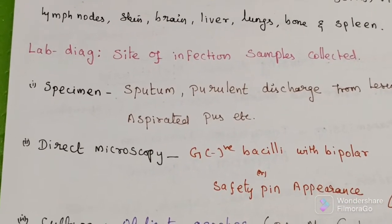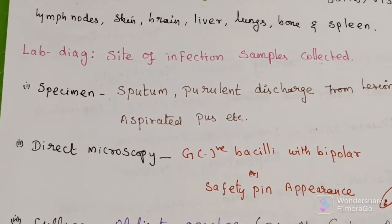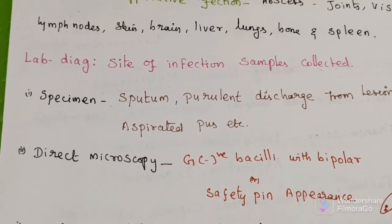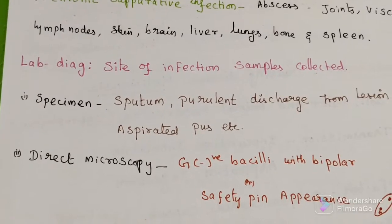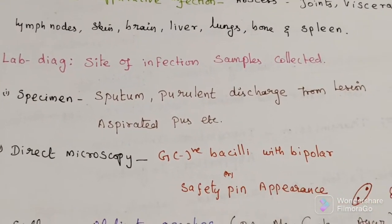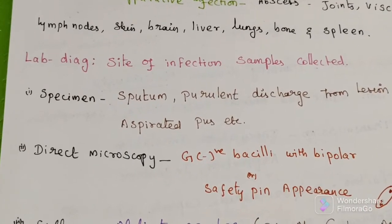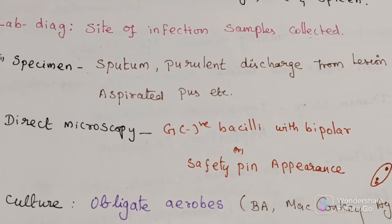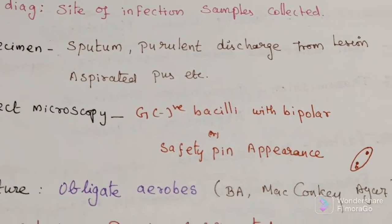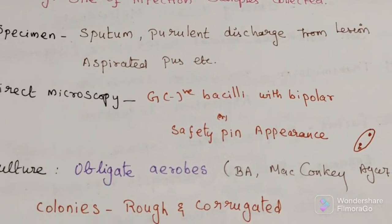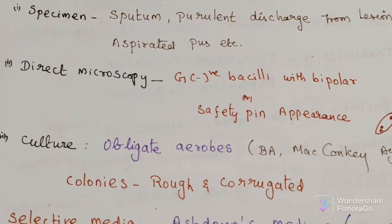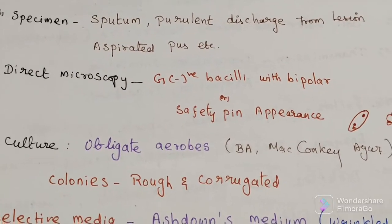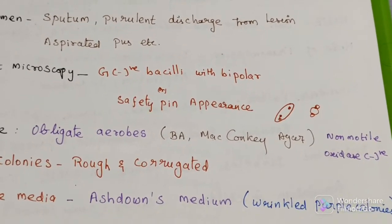For laboratory diagnosis, specimens are collected based on the site of infection and may include sputum, pus, discharge from lesions, aspirate, and other samples. On direct microscopy, typical gram-negative bacilli with bipolar or safety pin appearance can be seen. For culture, it can grow on blood agar medium and MacConkey agar medium. This organism is an obligate aerobe and non-motile oxidase-negative.